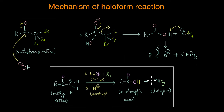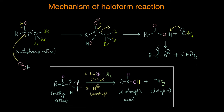So this is the final haloform reaction. For all of this to happen, we must have a COCH3 group in our starting carbonyl compound. Only then can we form a trihalomethyl ketone, which on cleavage gives the carboxylate ion and haloform. Any other carbonyl compound with alpha hydrogens but no COCH3 group cannot give a positive haloform reaction, because it cannot form the trihalomethyl group needed for the specific cleavage. This is why only methyl ketones undergo this reaction.